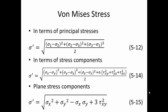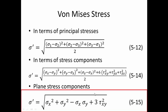Remember from Chapter 5, von Mises was first given in terms of principal stresses, then in terms of original stress components. What we're actually going to use is the plane stress form. We're going to have only a Sigma X and a Tau XY — Sigma Y is generally zero. We'll have bending for Sigma X and Tau XY from torsion.